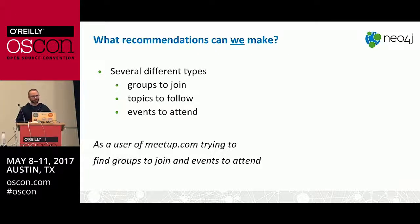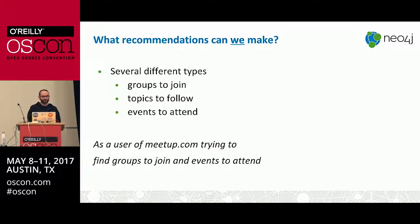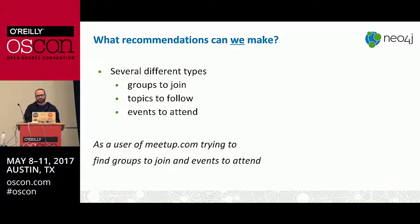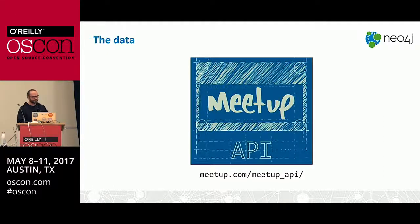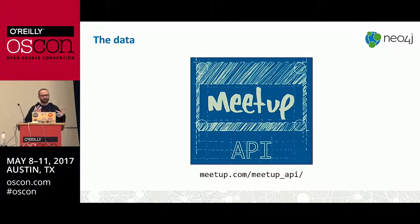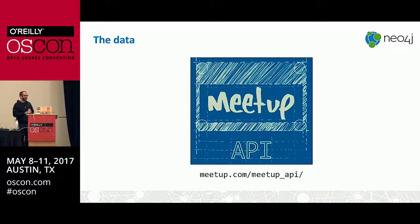We talked about the types of recommendations we can make: groups you may be interested in joining, topics you might be interested in following — you can follow topics without actually joining a group — and specific events you might be interested in attending. What we're going to do is take the approach of a meetup.com user, first recommending groups for them to join, starting without personalized information and then building up our data model for more complex and relevant recommendations.